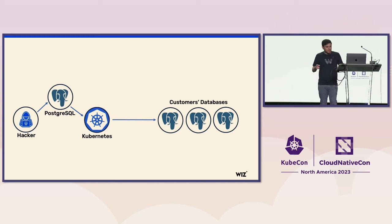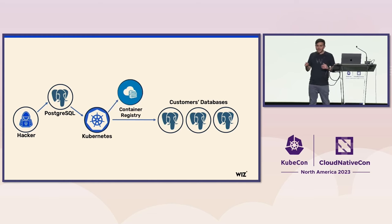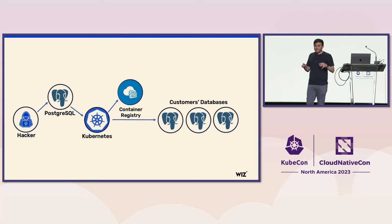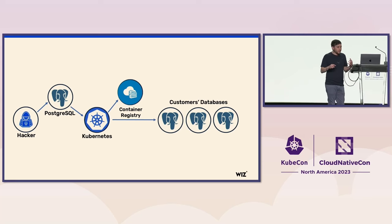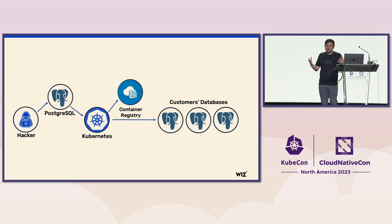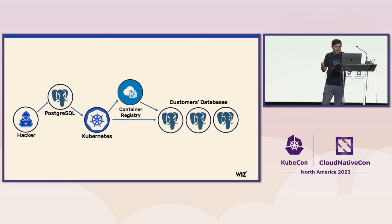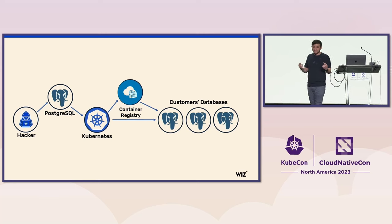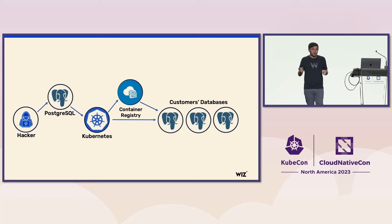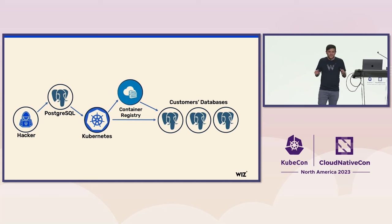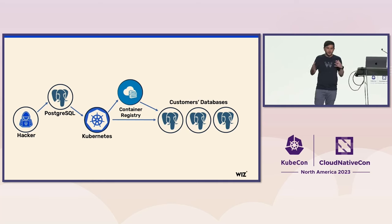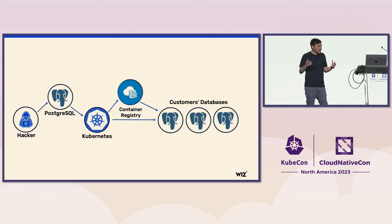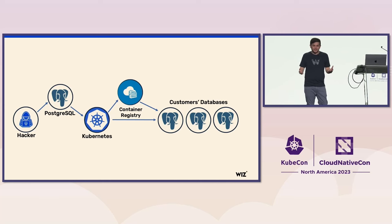Not only that, but we were also able to gain write access to Alibaba's internal container registry containing all their images for different cloud services, poison their images with whatever malicious code we wanted to insert, and have that code executed on all the other customers' databases and on other cloud services on Alibaba Cloud too. So how did we do it? What sort of mistakes and bugs were we able to exploit to get this crazy level of privilege? And most importantly, how can you guys prevent yourselves from making similar mistakes when building these sorts of services?